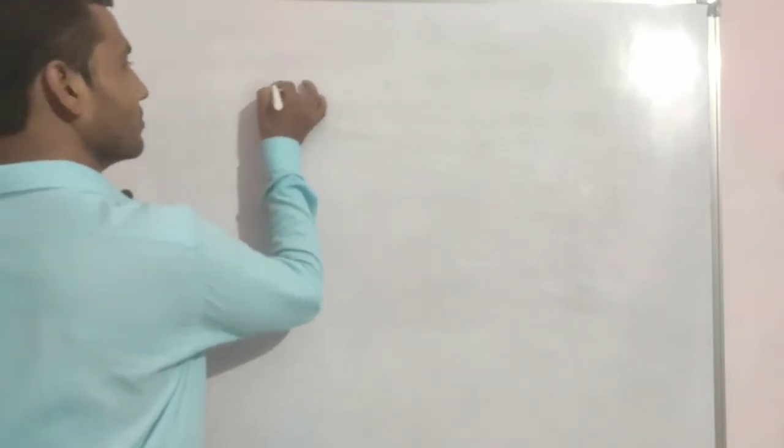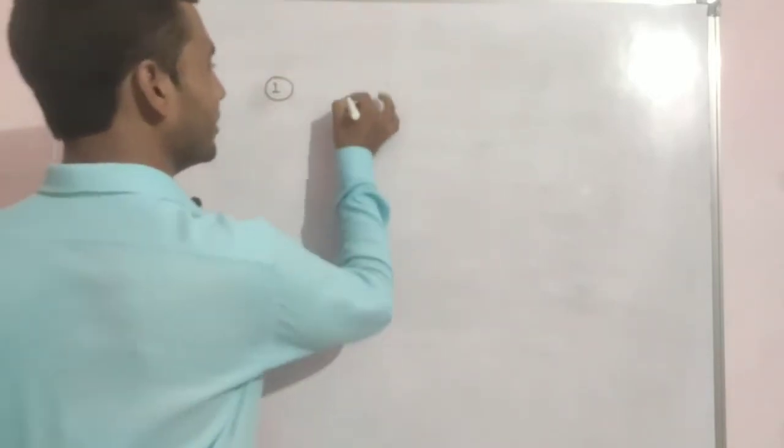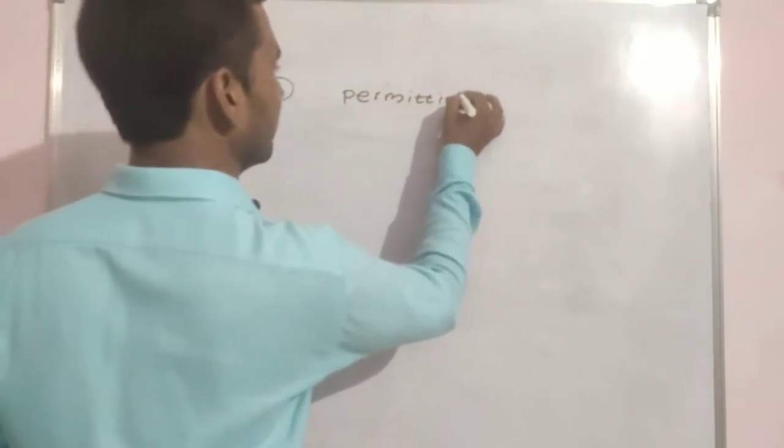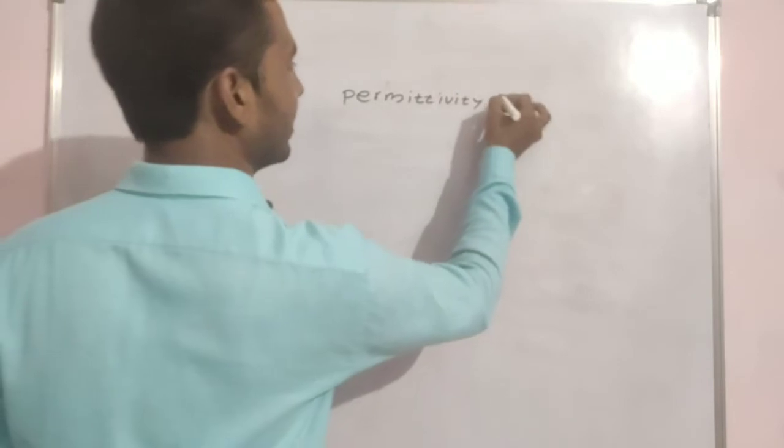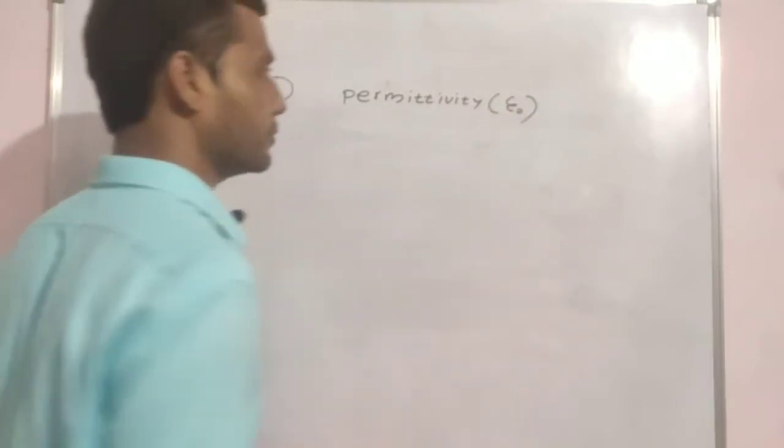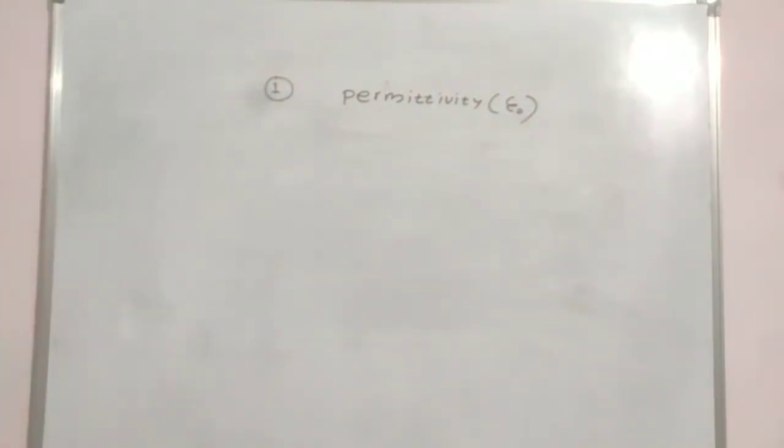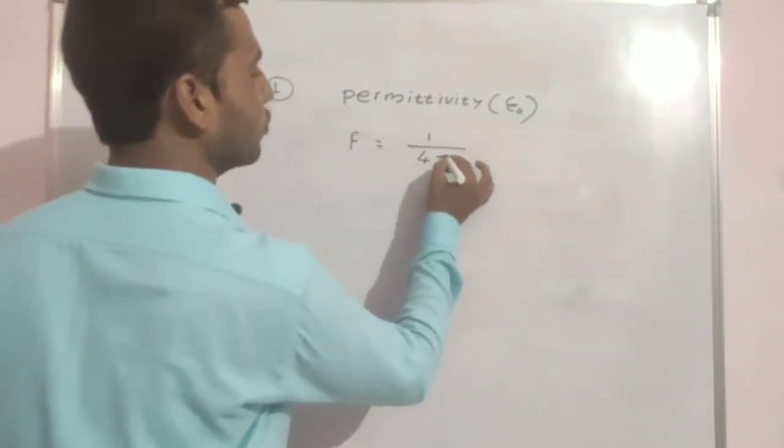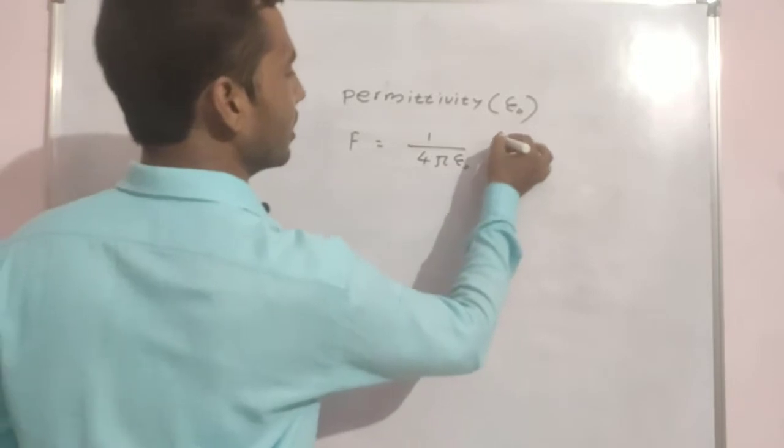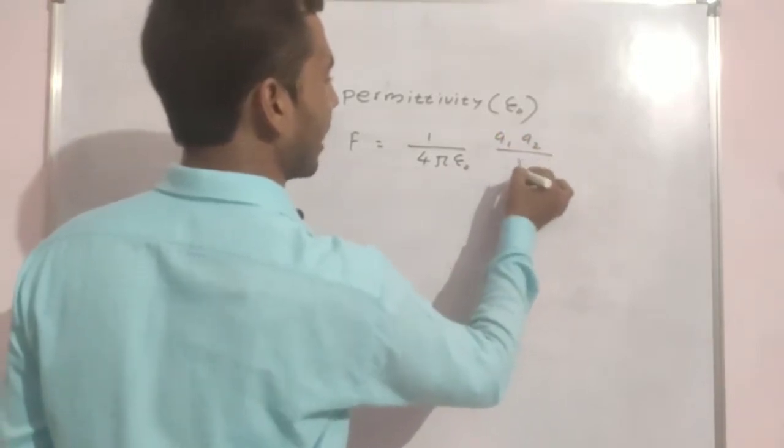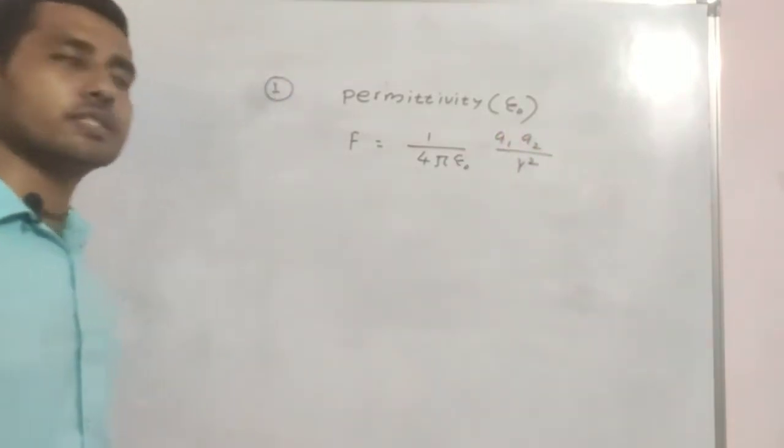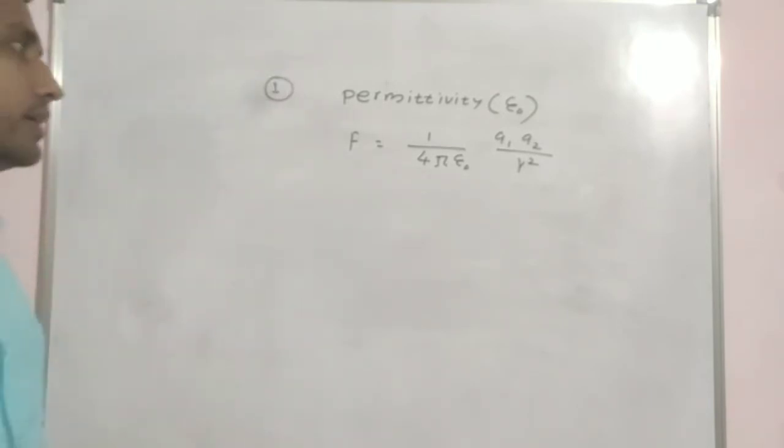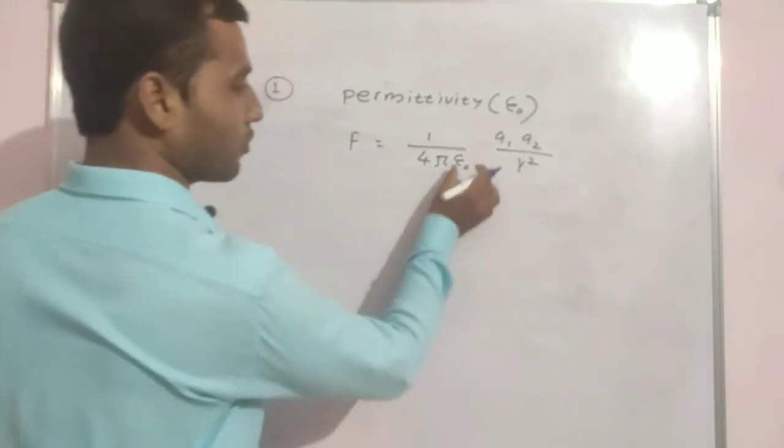First is the permittivity that is denoted by epsilon naught. So in Coulomb's law, we know that F is equal to 1 by 4 pi epsilon naught q1 q2 by r square, where epsilon 0 is known as permittivity. So we have to find the dimensions of permittivity. So first we have to make the formula for it.